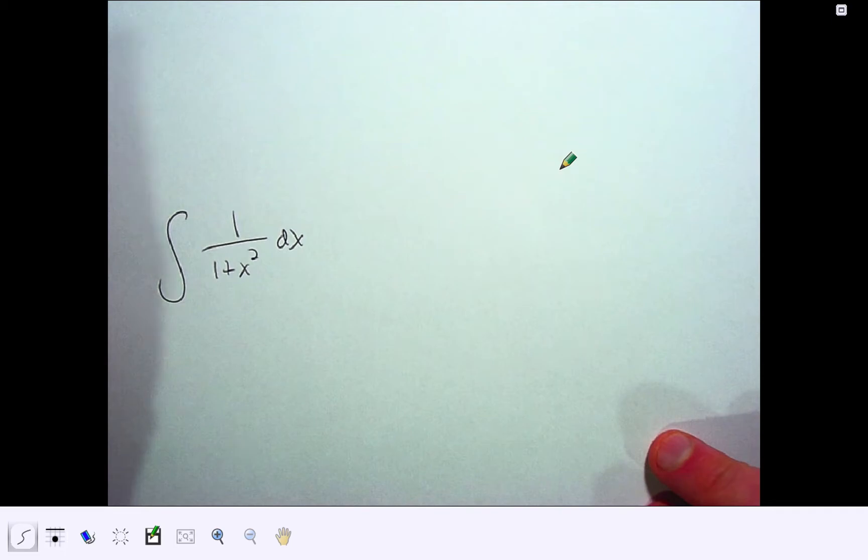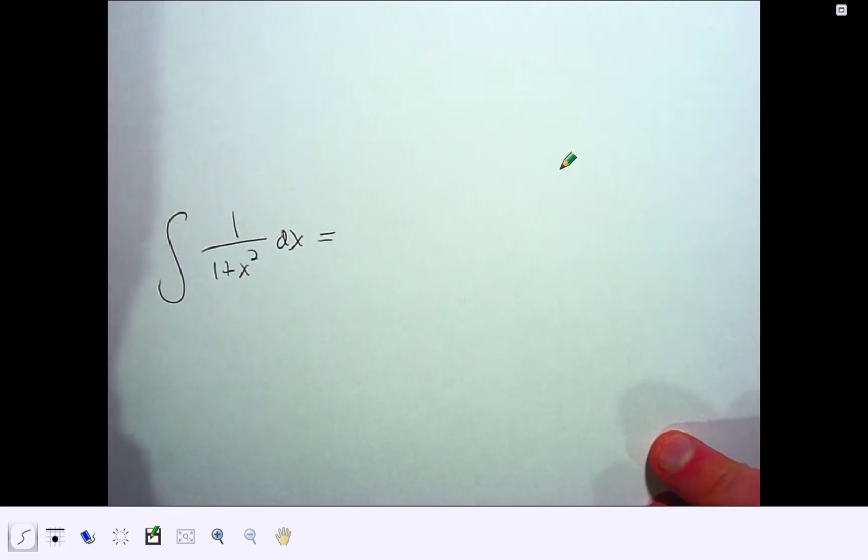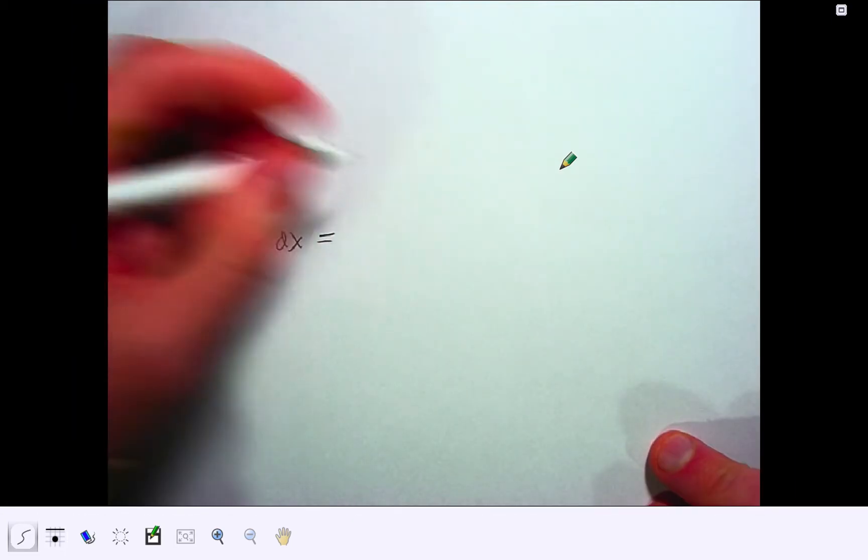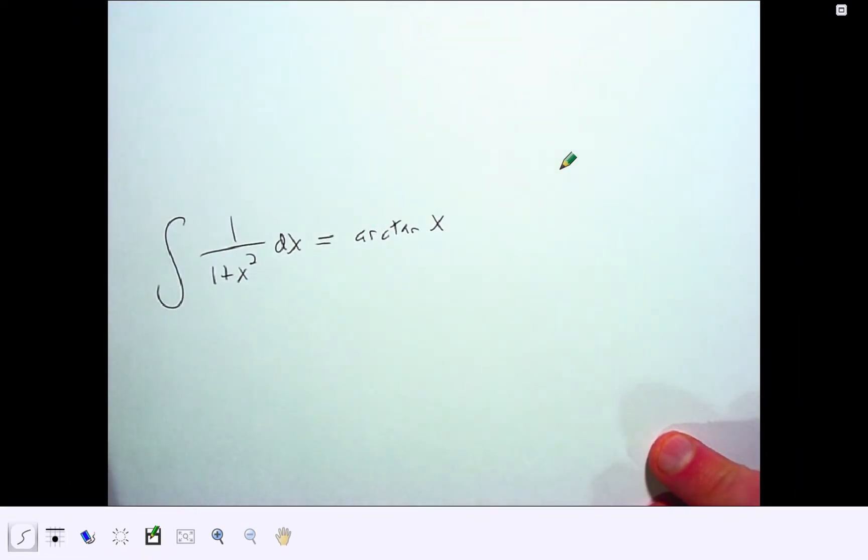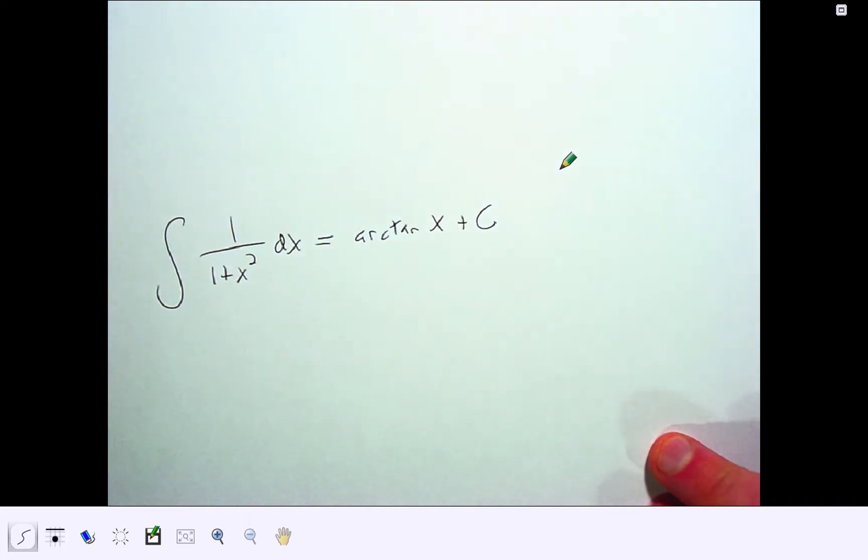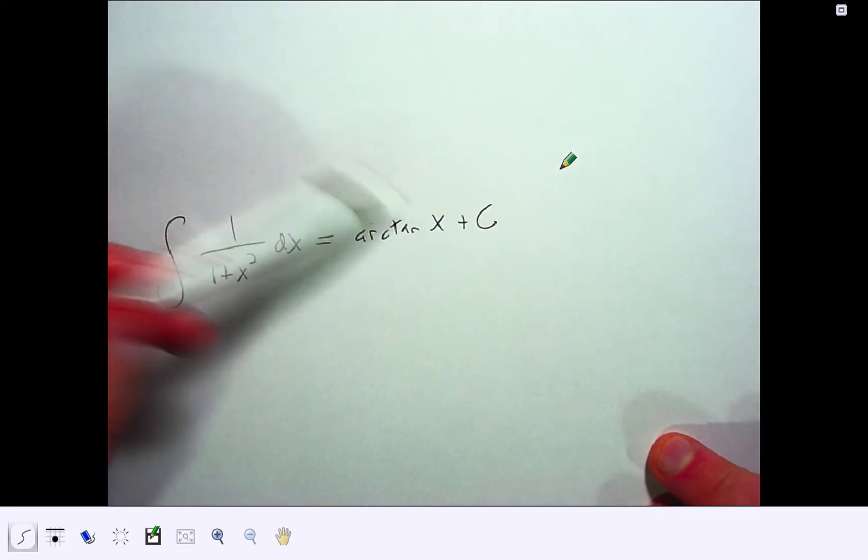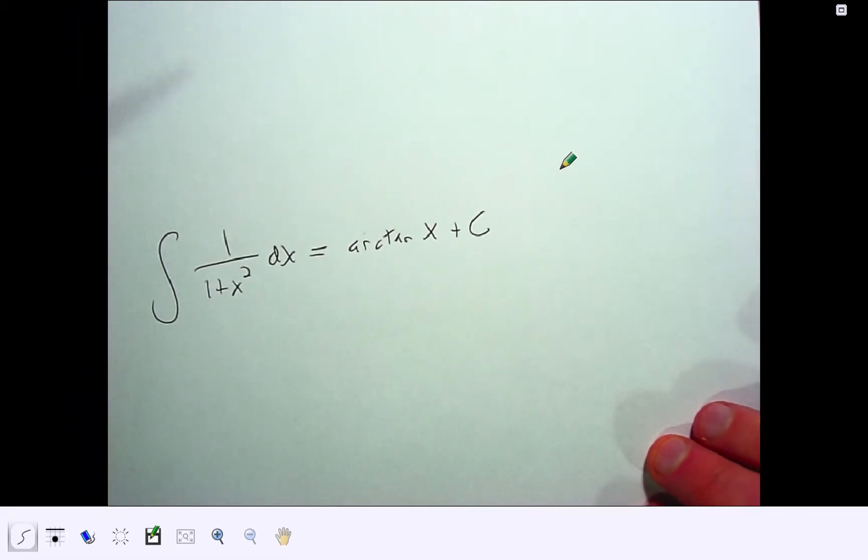If I look at this one, I should hopefully recognize that 1 over 1 plus x squared is the derivative of arctangent, or inverse tangent, and so boom, I just write that down. And we're good to go. The derivative of arctangent gives me that, and so I'm back where I need to be.